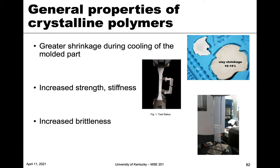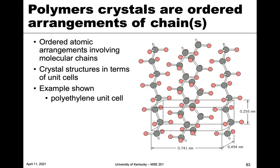So these crystalline polymers are composed of crystals, just like we talked about with metals and ceramics — there's an ordered arrangement. However, instead of atoms or ions, they're ordered arrangements of the chains, one chain or multiple chains. This kind of shows you the unit cell of polyethylene. You can see the box here and instead of an atom or an ion, you see that it's a portion of the chain — a portion of the molecule itself.